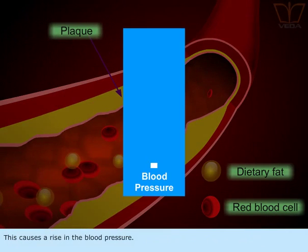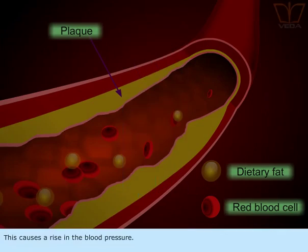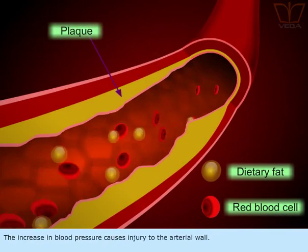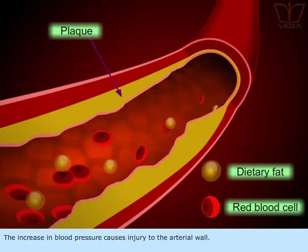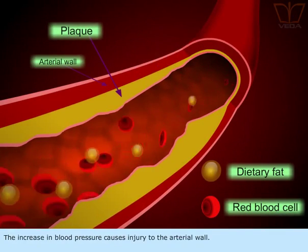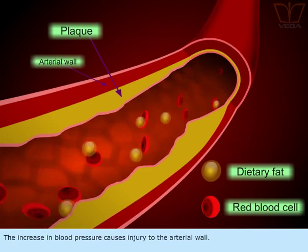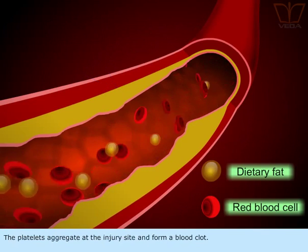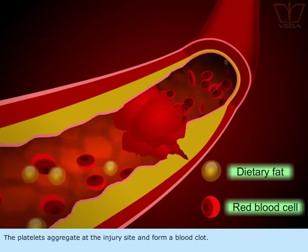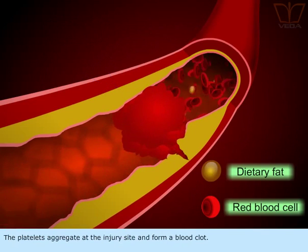This causes a rise in blood pressure. The increase in blood pressure causes injury to the arterial wall. The platelets aggregate at the injury site and form a blood clot.